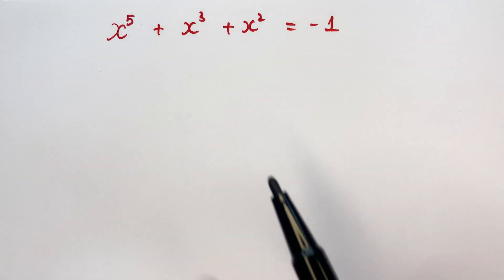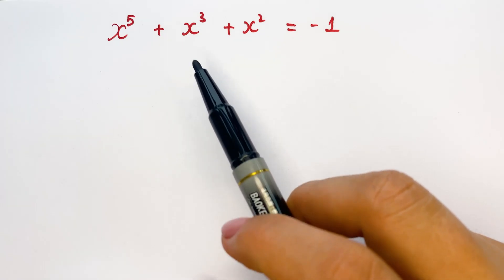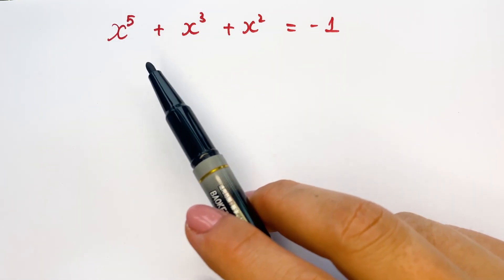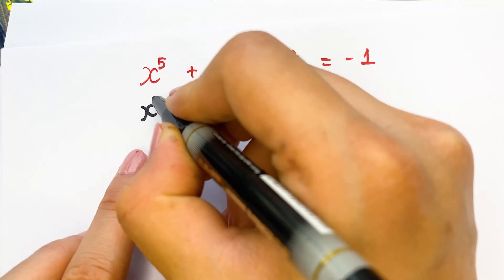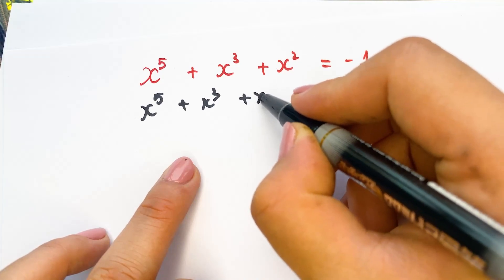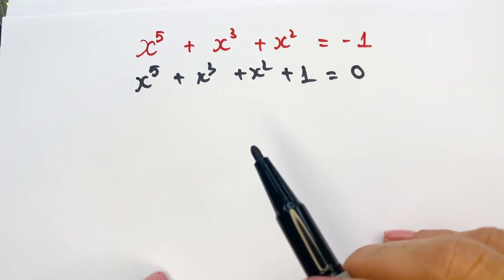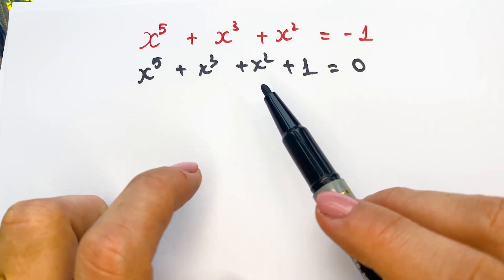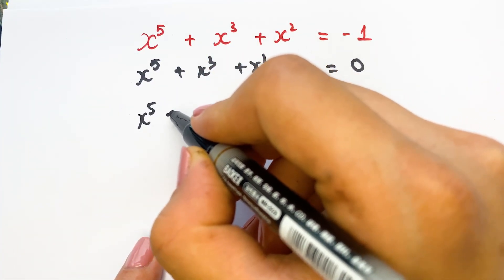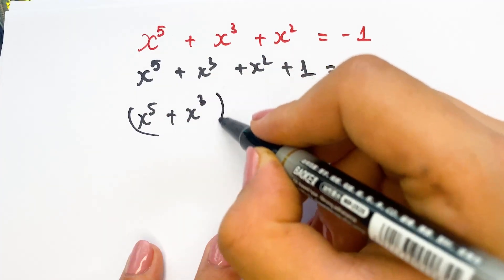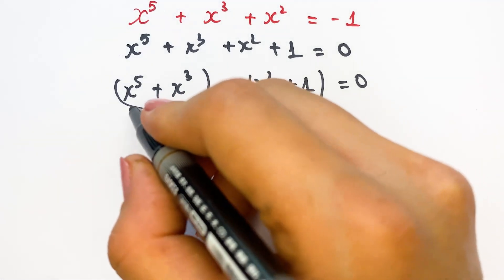Hello everyone. How to find the value of x in the equation x⁵ + x³ + x² = -1. We have a four-term expression: x⁵ + x³ + x² + 1. We can write this as x⁵ + x³ + x² + 1 = 0, which may be helpful to solve by factoring by grouping.